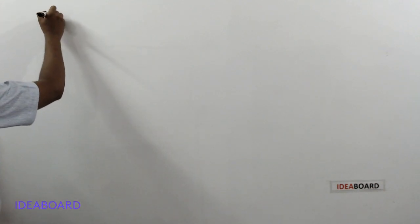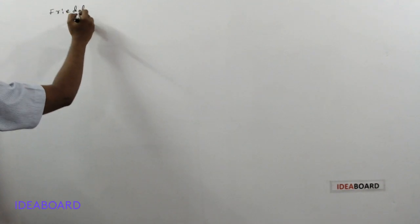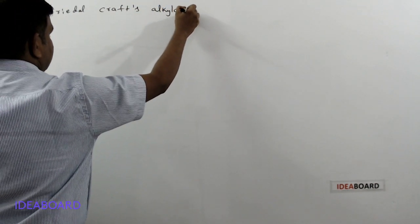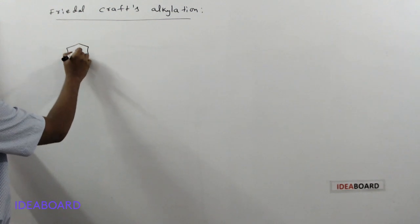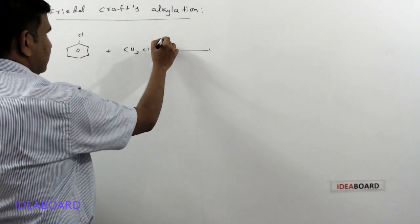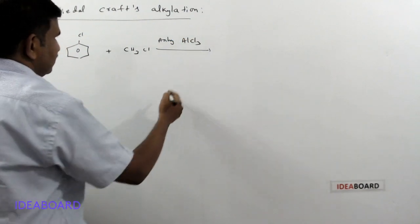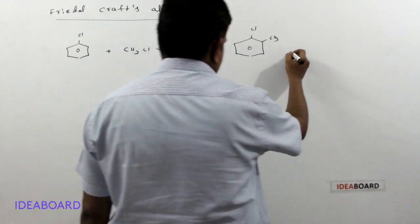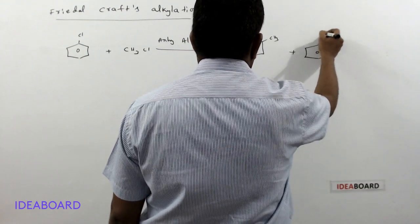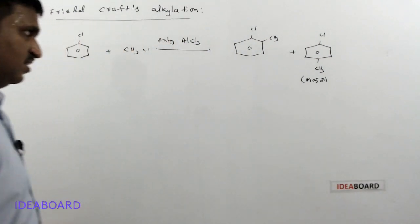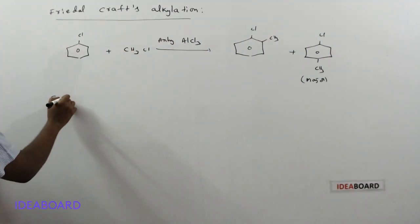The next reaction is Friedel-Crafts reactions — Friedel-Crafts alkylation and Friedel-Crafts acylation. In Friedel-Crafts alkylation, chlorobenzene reacts with an alkyl halide like methyl chloride in the presence of anhydrous AlCl₃. It forms ortho-chlorotoluene or para-chlorotoluene, with para-chlorotoluene always being the major product. HCl is formed as a byproduct.